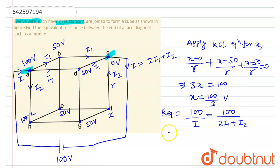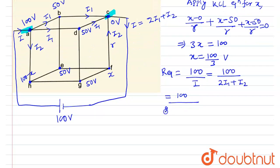This equals 100 over [2 times I₁ plus I₂], where I₁ is 50/r and I₂ is x/r. Since x = 100/3, we have I₂ = (100/3)/r.